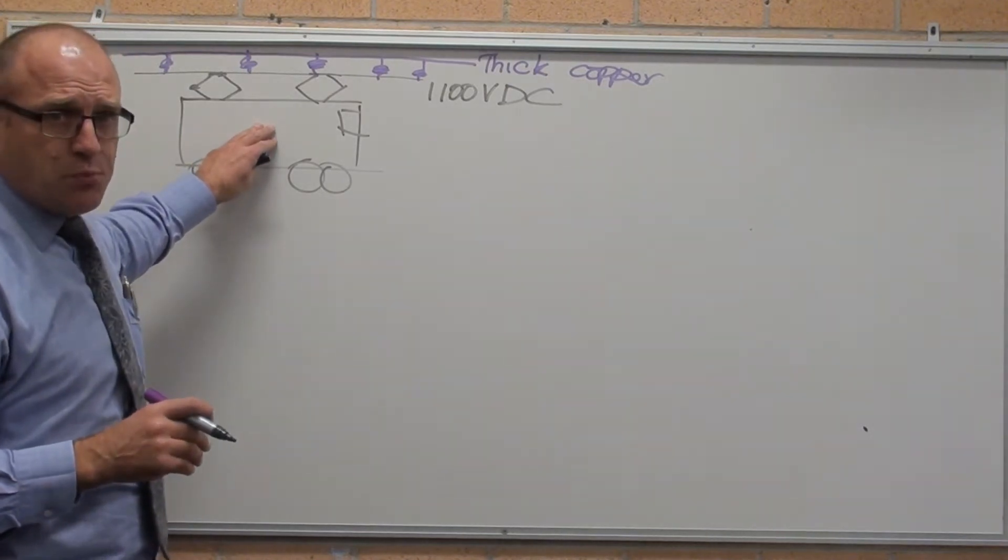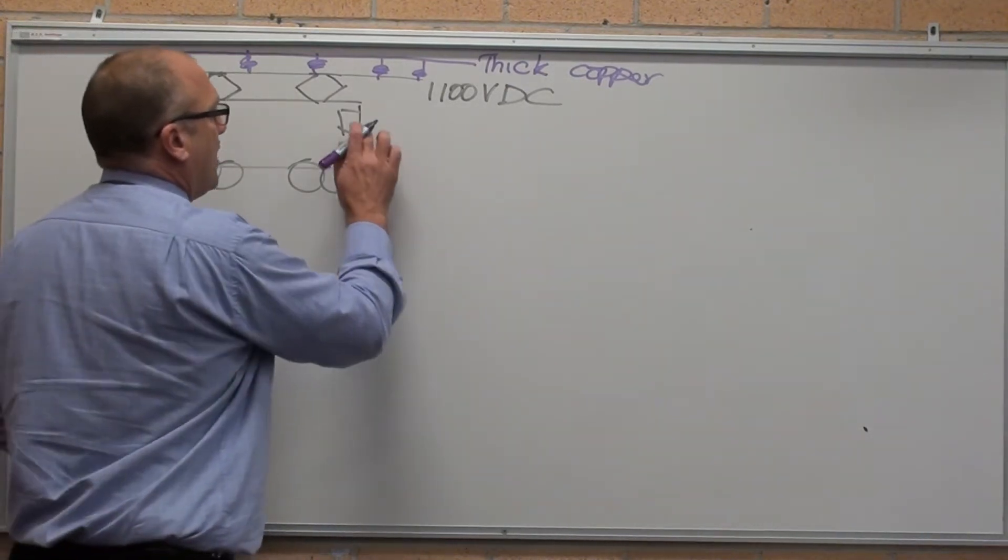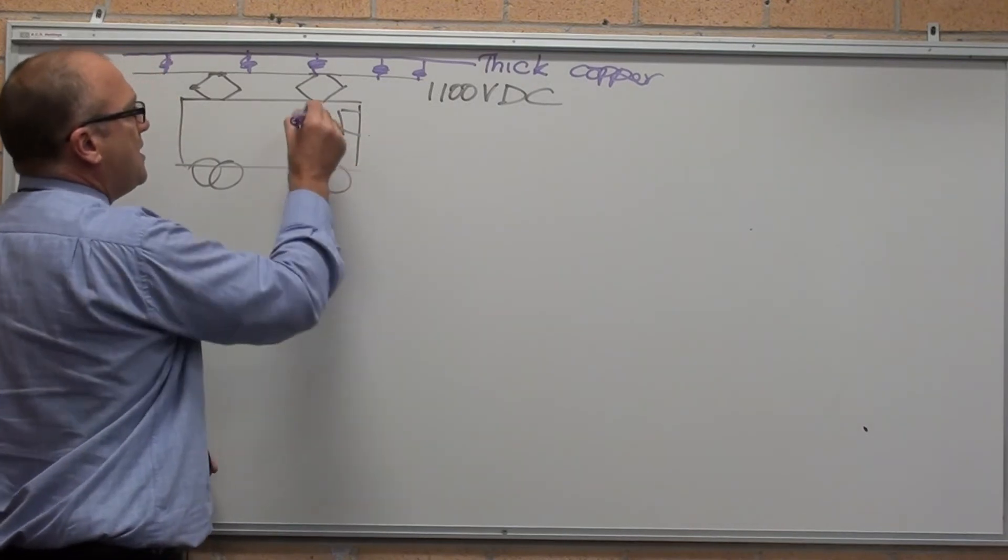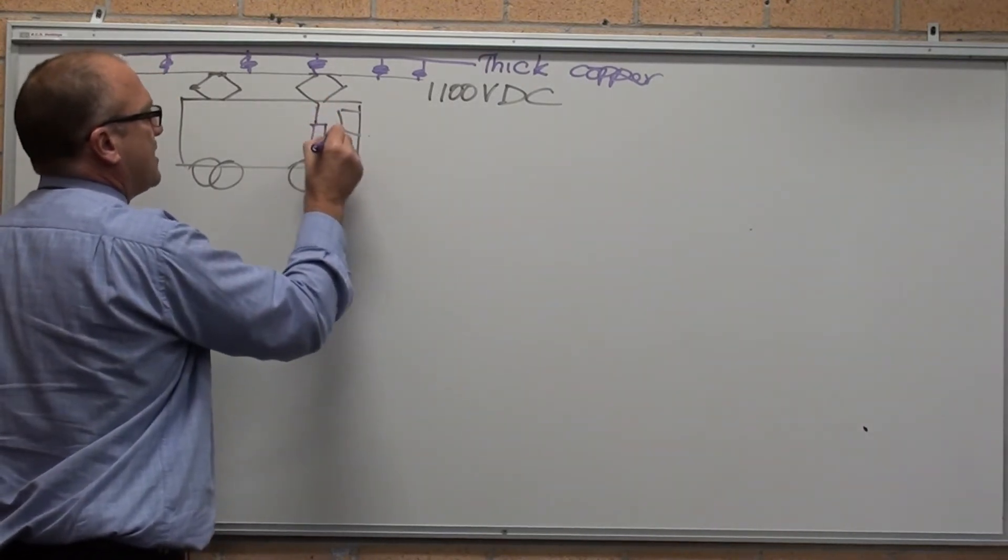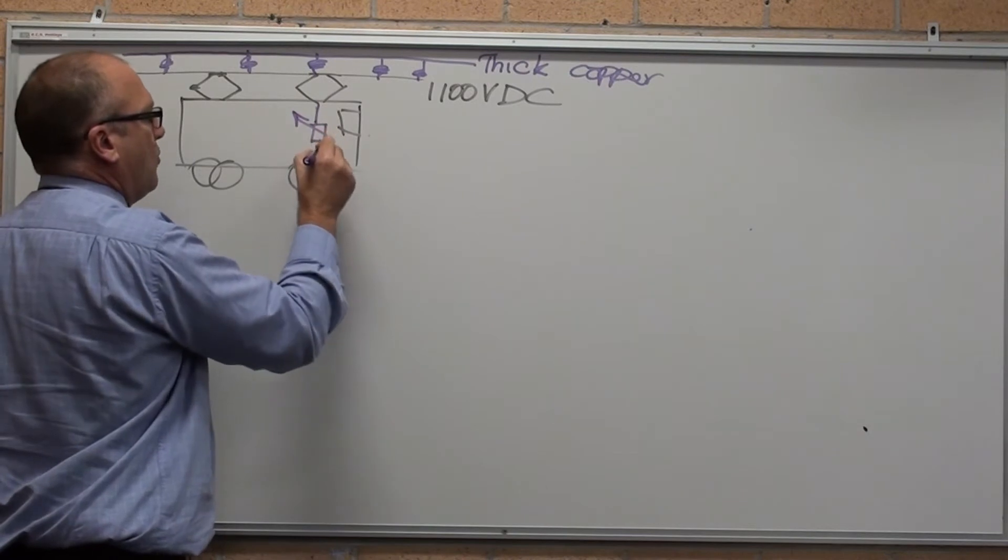That is how the Sydney trains work. The old school trains were DC, just with a variable resistor controlled by the driver that went to the motor.